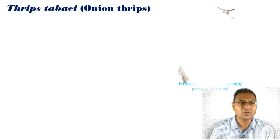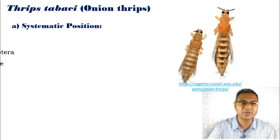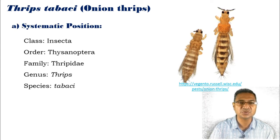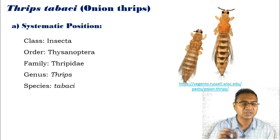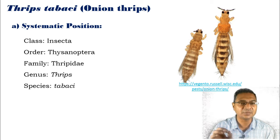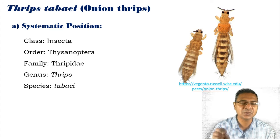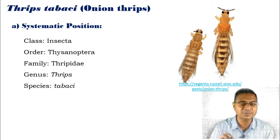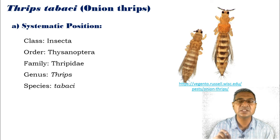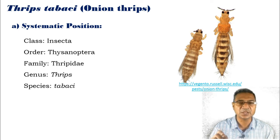About Thrips tabaci: the systematic position is phylum Arthropoda, class Insecta, order Thysanoptera. Members included in that order are commonly known as thrips. Family Thripidae, genus Thrips, and species tabaci.